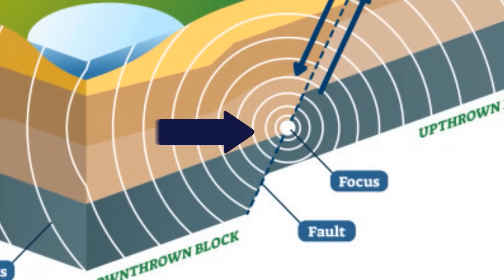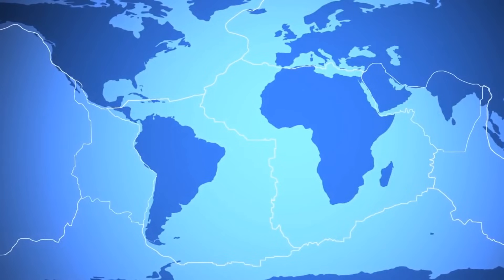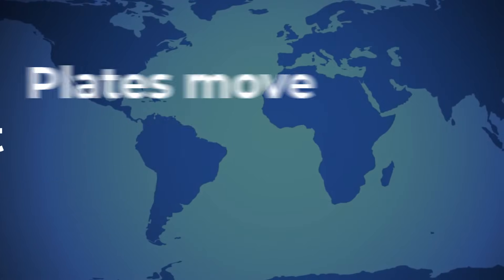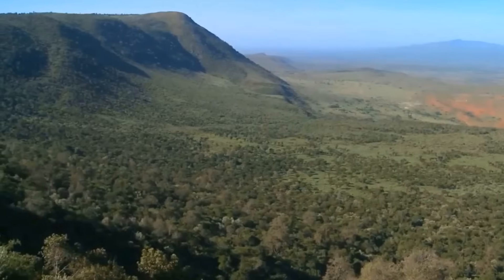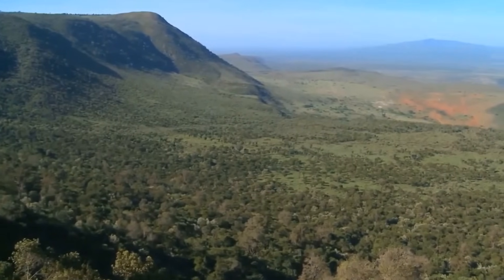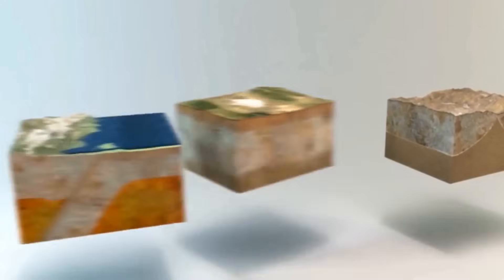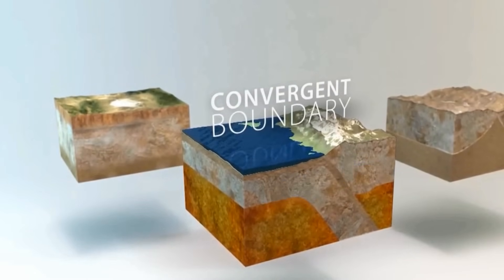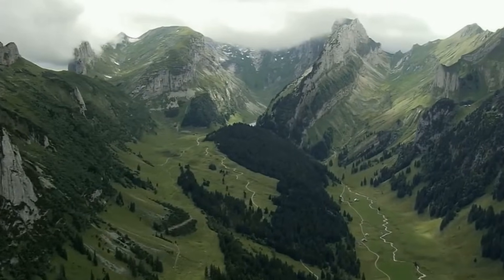The point where this energy is released is called the hypocenter, and the location right above it on the Earth's surface is called the epicenter. When the plates detach at the boundaries, they typically move in three different ways: divergent boundaries, where plates move away from each other, which can form new water bodies like rivers and oceans; convergent boundaries, where two tectonic plates slide over each other and may form geological structures such as mountains.